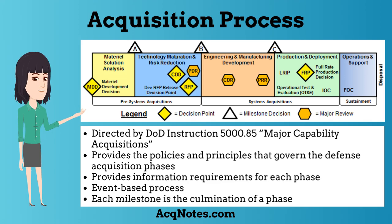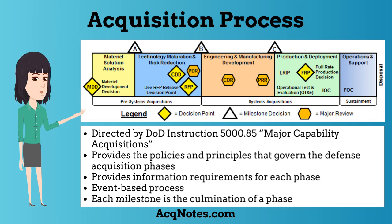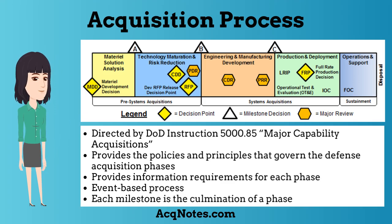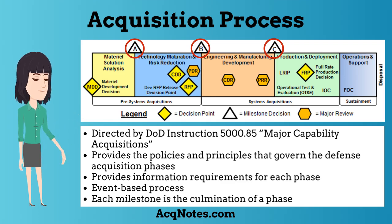It also identifies the specific statutory and regulatory reports and other information requirements for each phase and milestone. The Department of Defense calls the system an event-based process where a program goes through a series of phases, milestones, and reviews from beginning to end. Each milestone is the culmination of a phase where it's determined if a program will proceed into the next phase.